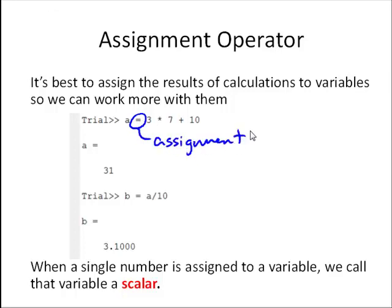When we're talking about the assignment operator, we're talking about the equal sign. In general, we want to assign the results of all our calculations in MATLAB to variables so we can work more with them. So here's a simple example where we've taken that previous calculation, assigned the result to A, a variable A, and then we've used A again here in the subsequent calculation to calculate B. We've assigned that result to B.